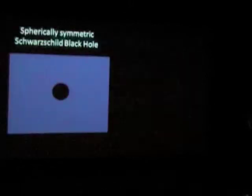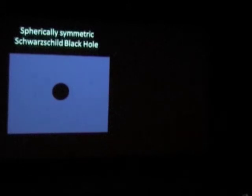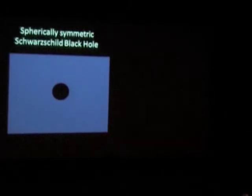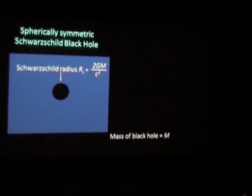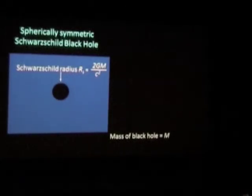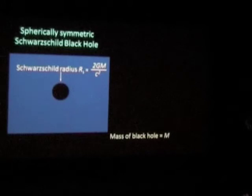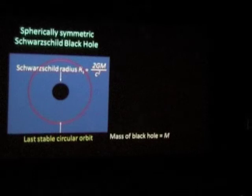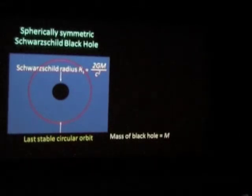Here is a spherically symmetric black hole sitting on a blue background, because otherwise you wouldn't see it. There are only one or two things you need to know about these spherically symmetric black holes. First, there's a certain black radius — the Schwarzschild radius — given by that equation, where N is the mass of the black hole. In addition to that black surface through which nothing can come back out again, there's a last stable orbit about the black hole at three times the radius of the black hole itself.